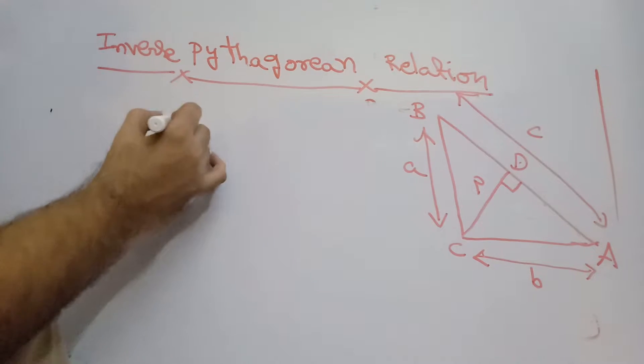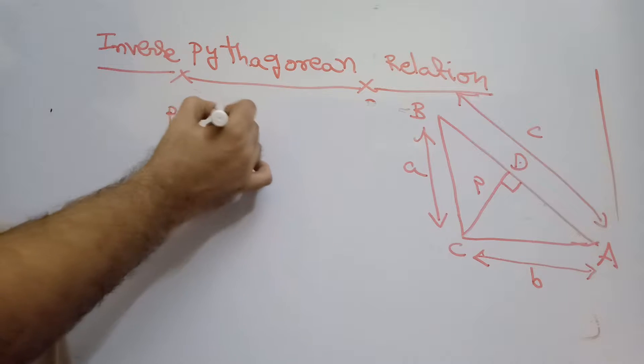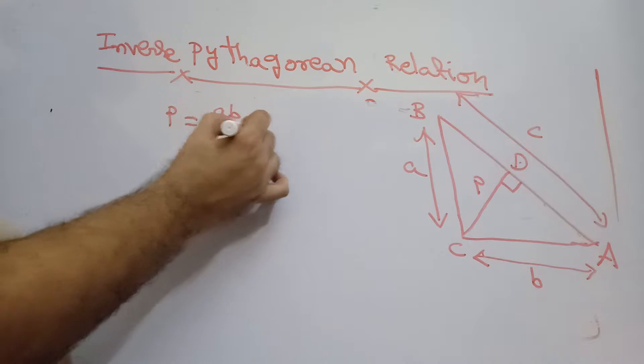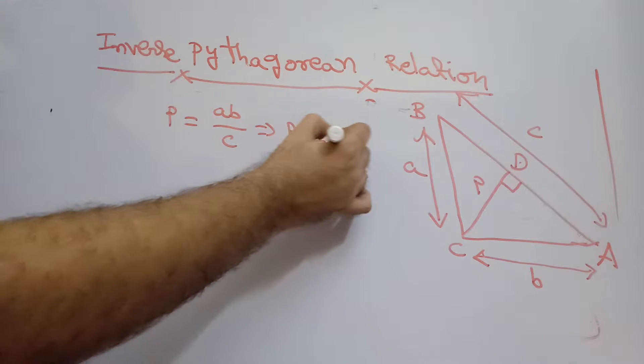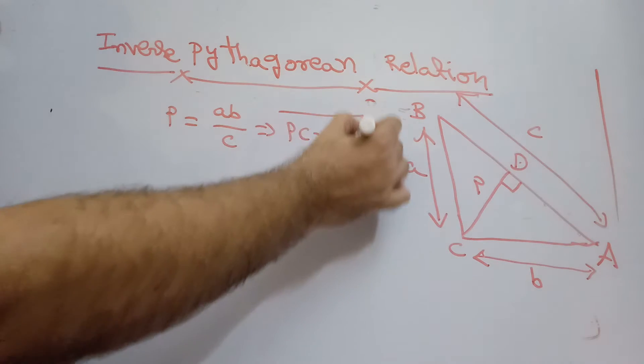The first property I want to write is that P equals AB by C, or another relationship, PC equals AB. This is one relationship.